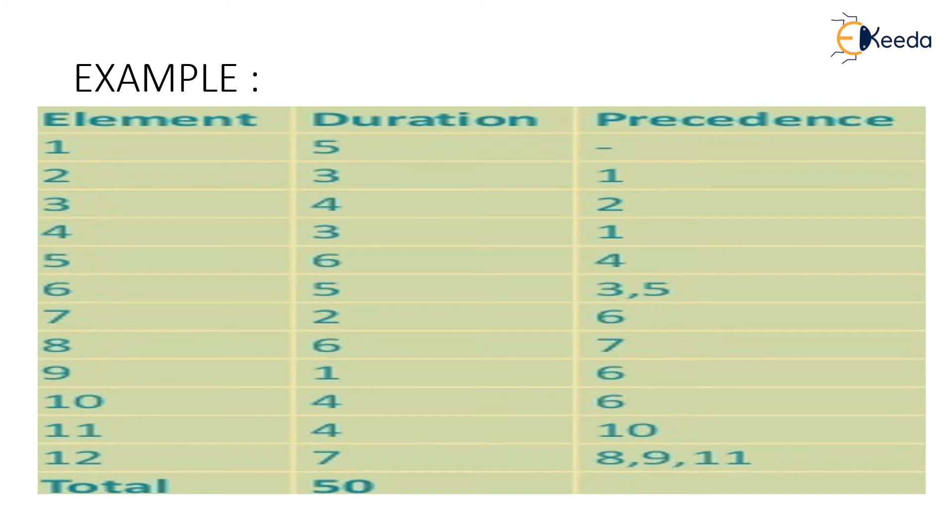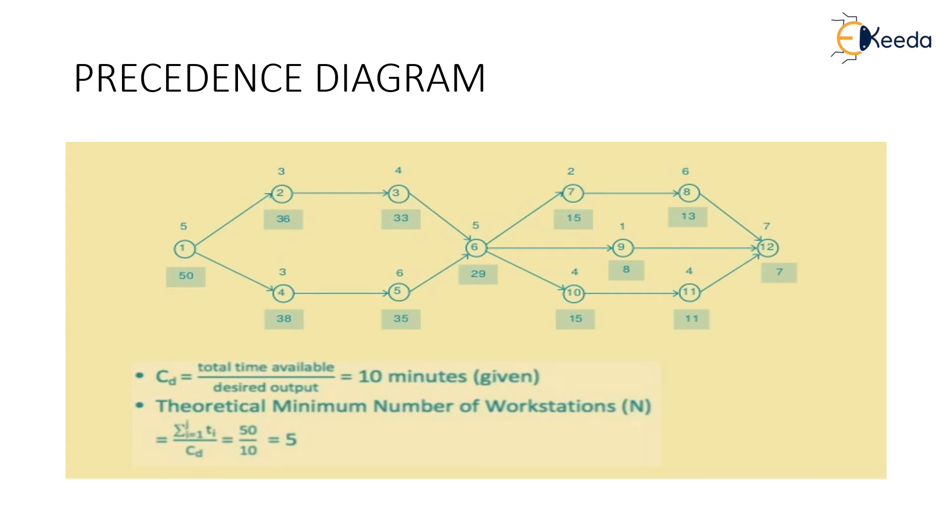So based upon these precedence times and precedence numbers we will be having a precedence diagram which indicates that 1 is connected to 2 and 3, 2 is connected to 3, 3 is connected to 6. Similarly, 4 is connected to 5 and 5 is connected to 6.